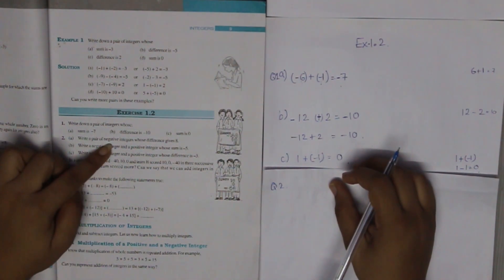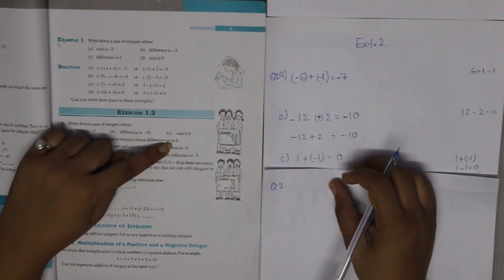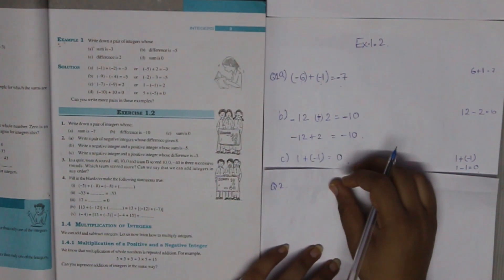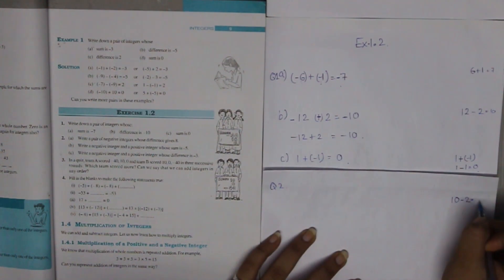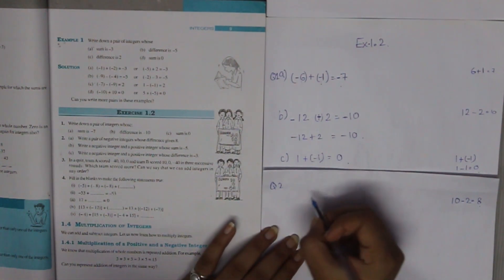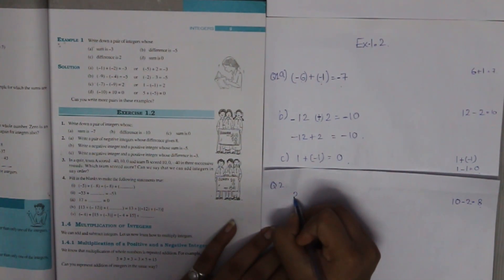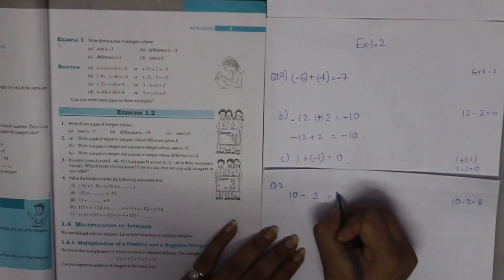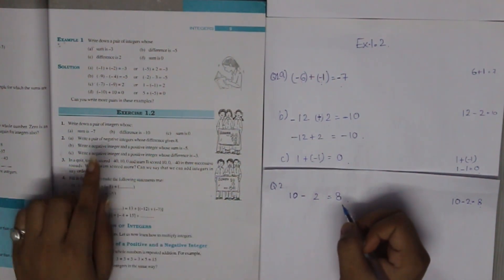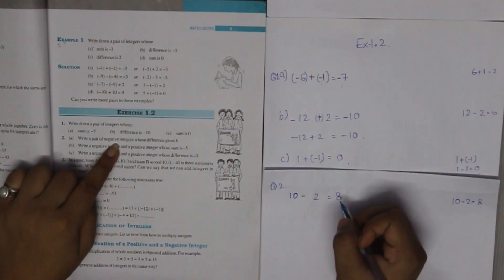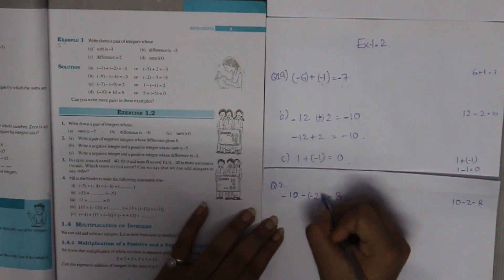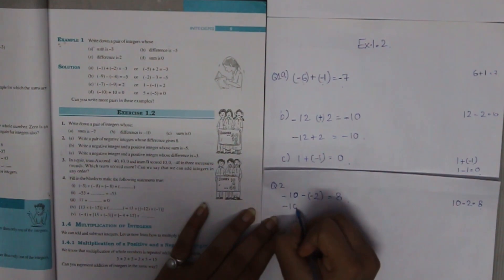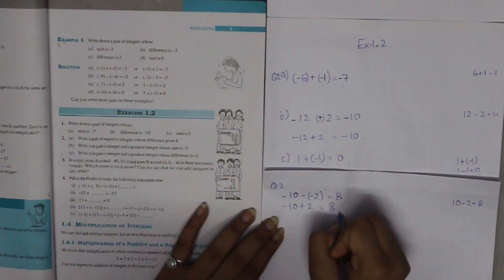Number 2, Part A: Write a pair of negative integers whose difference gives 8. We need two numbers whose difference is 8. Like 10 and 2 — 10 minus 2 equals 8. But we need two negative numbers, so we make both negative. Minus 10 minus minus 2 equals 8.